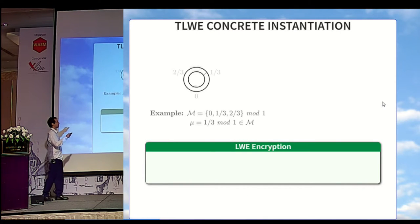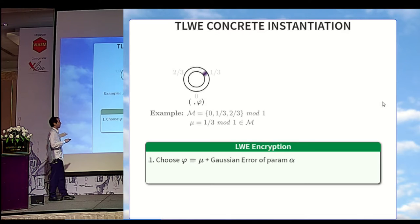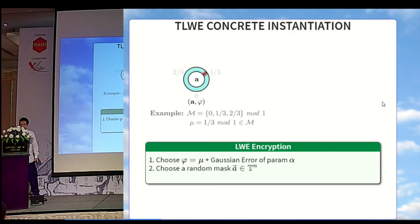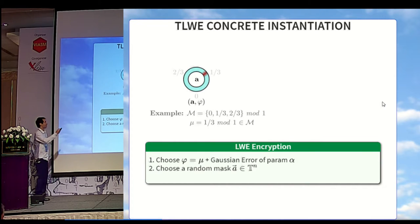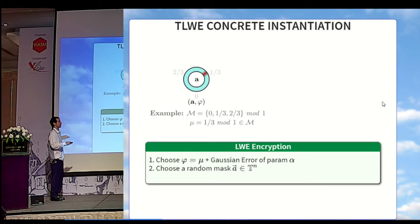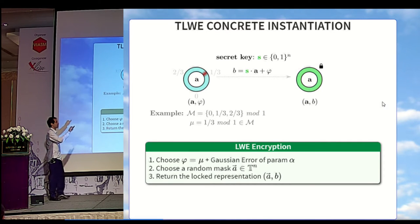First, the message space will be the continuous torus, so it's represented by a circle, zero is at the bottom, and we rotate counterclockwise. Suppose that we have the ternary message space, and we want to encrypt one-third. What we'll do is, we'll first choose a number of phi, which is the message plus some Gaussian error of parameter alpha, so that means a sample of this distribution, which we'll call the phase of the ciphertext. We'll also choose a random vector, which is totally uniform in the torus, which we'll call the mask of the ciphertext, and we'll blind this ciphertext using the secret key. By computing B equal SA plus phi.